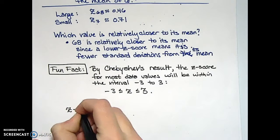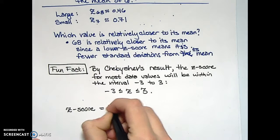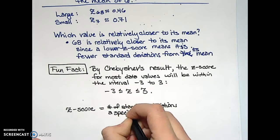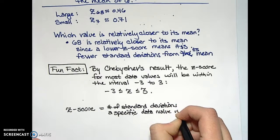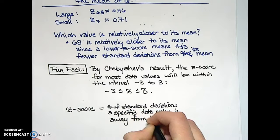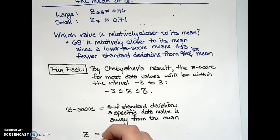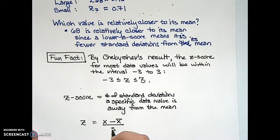So again, the z-score for a specific data value calculates the number of standard deviations that value is away from the mean. The formula we use is: take your specific data value, subtract the average, and divide by the standard deviation. And that is the z-score.